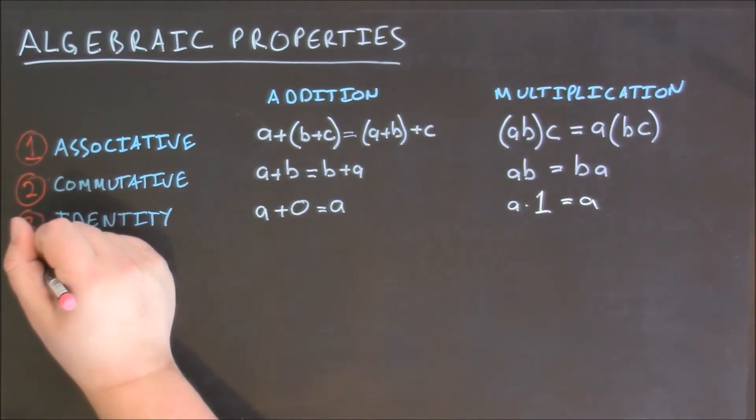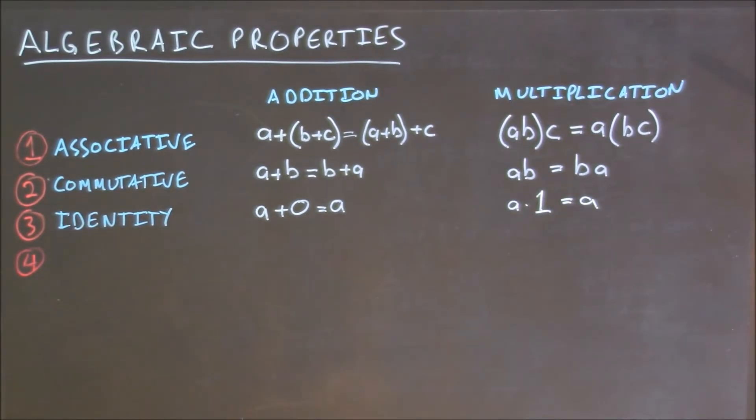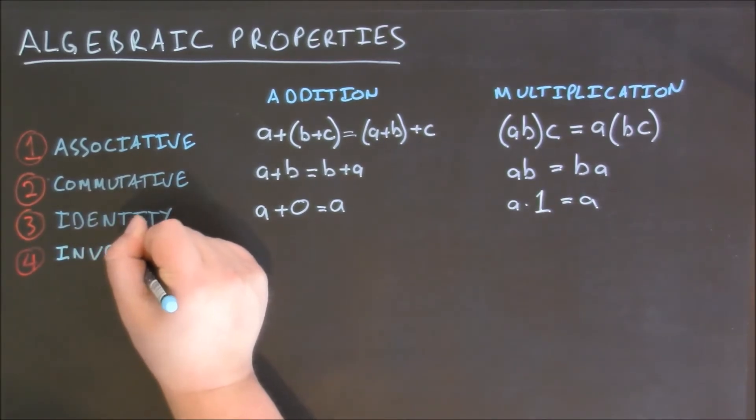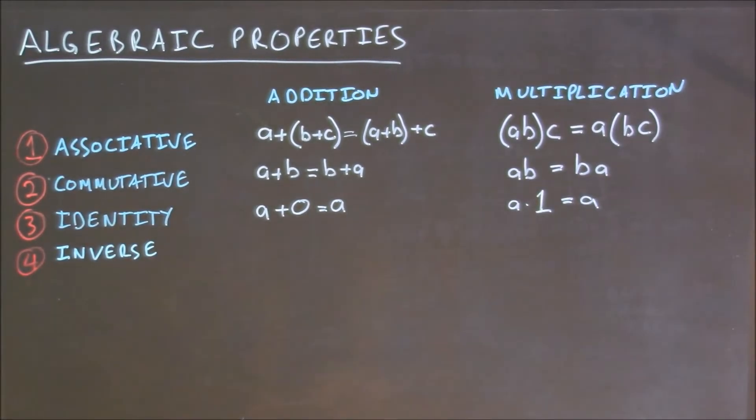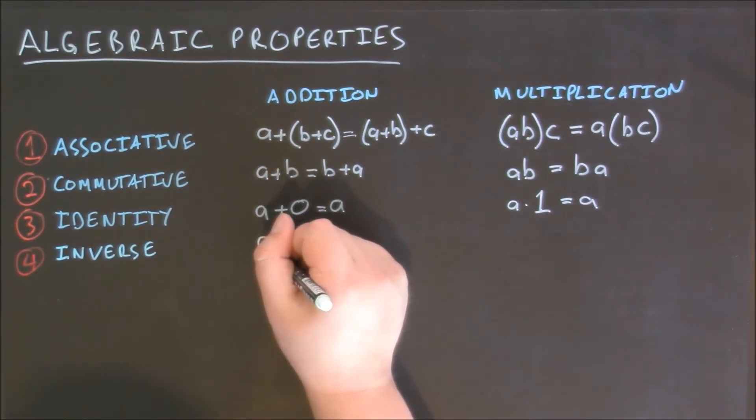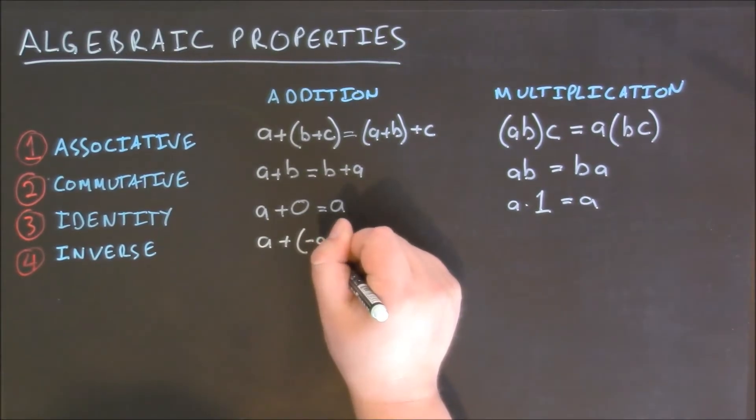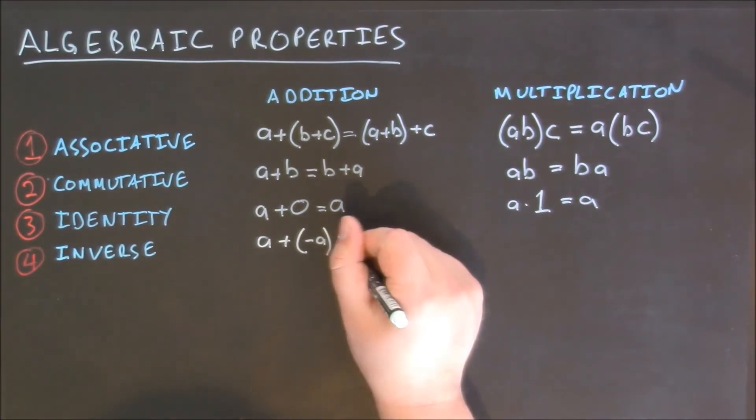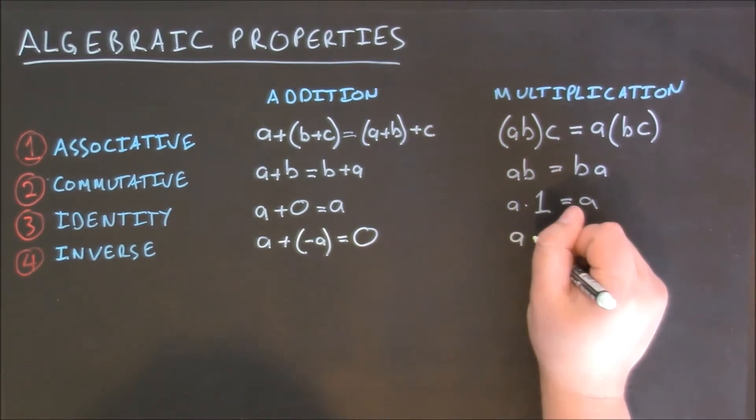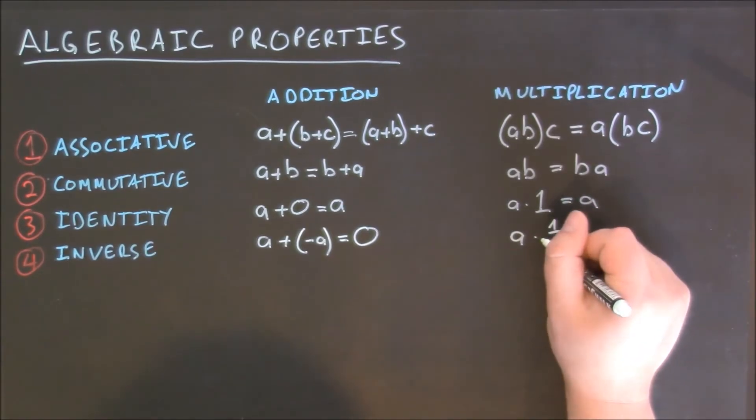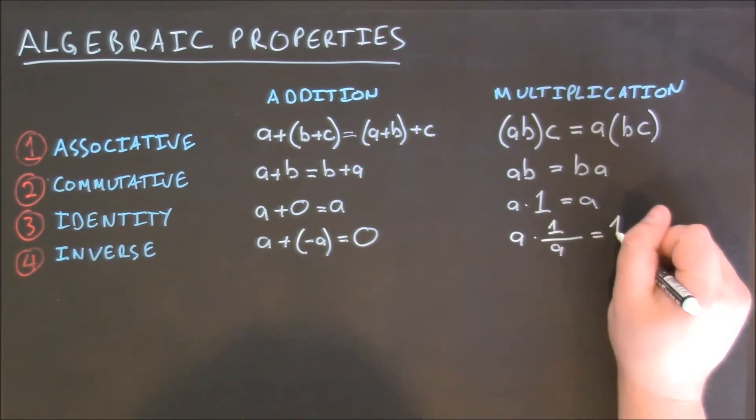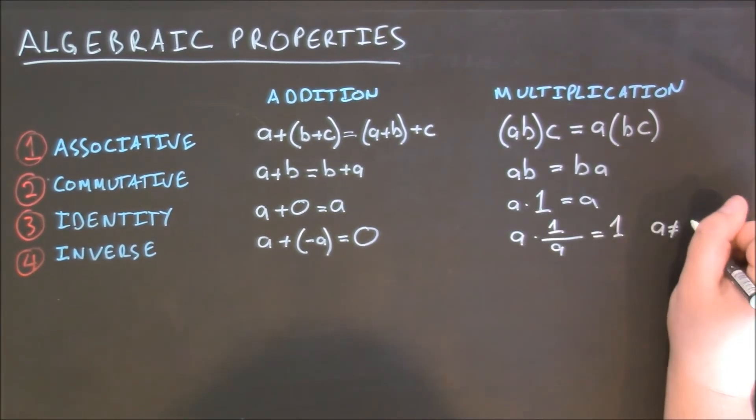The fourth property is the inverse property. For addition, it says that if I have a and I add to it the opposite of a, I get zero. And for multiplication, if I take a and I multiply that by the inverse of a, or one over a, I get one, so long as a is not equal to zero.